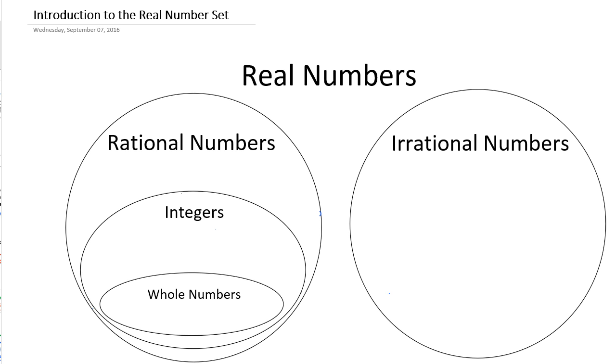So within this real number set, we really have two different kinds of numbers. We have rational numbers, which if you remember, we've been spending a lot of time with. We can write them as a fraction, and we've been referring to that fraction as m over n. Some integer over another integer where n is not equal to zero. We can also write them as decimals that end or repeat.